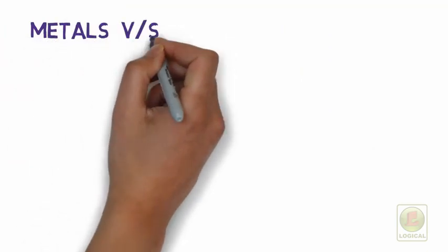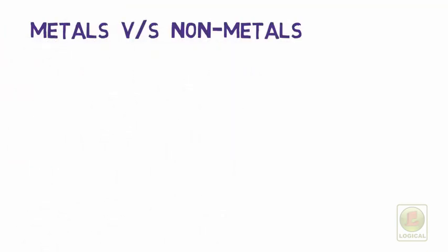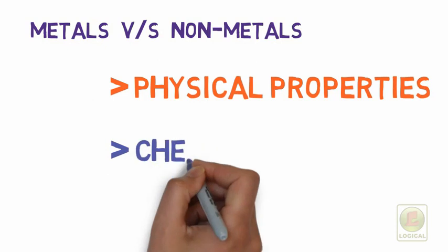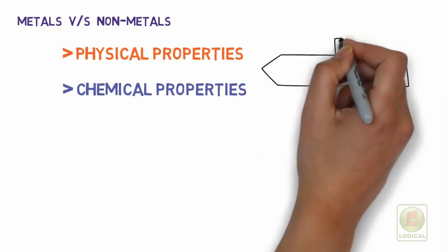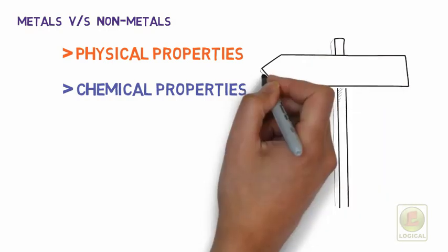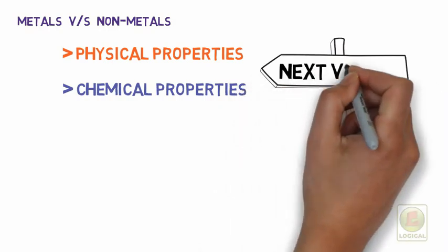Friends, metals can be distinguished from non-metals on the basis of their physical and chemical properties. We shall discuss these properties in our next video.